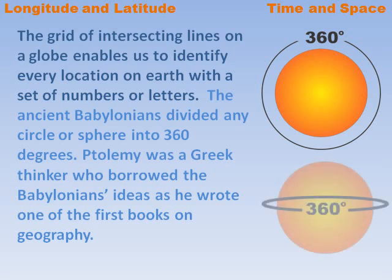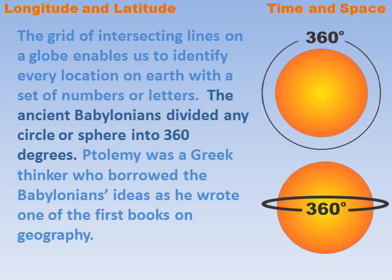The grid of intersecting lines on a globe enables us to identify every location on Earth with a set of numbers or letters.